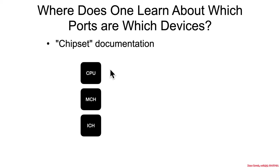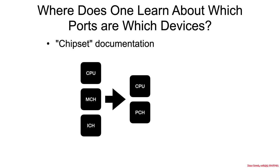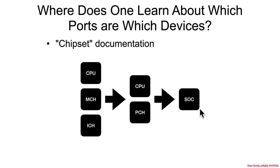A previous architecture had CPUs, MCHs (memory controller hubs), and ICHs (IO controller hubs). That architecture has generally moved towards the CPU and a platform controller hub. And over time, things continue to look more and more like a system on a chip, which may have some extra data sheet associated with it.